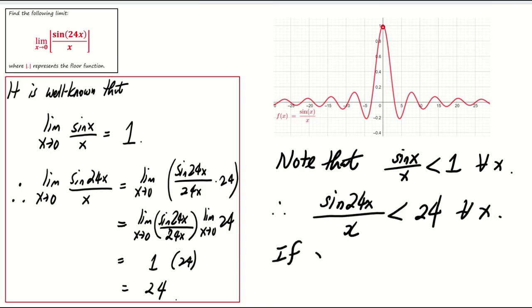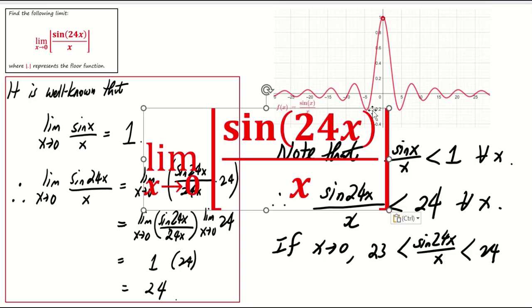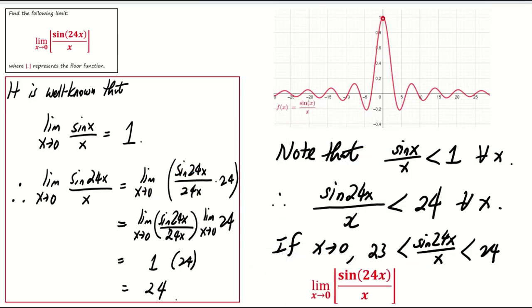When x near 0, sine 24x over x lies between 23 and 24. The floor function will map these to the largest integer less than or equal to it, which is 23. So, the answer for this question is 23.